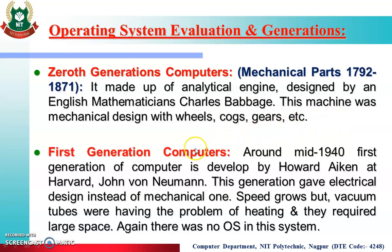After the zero generation, the next is the first generation, around the mid-1940s. This generation gave an electrical design instead of a mechanical one — speed grew up but vacuum tubes had the problem of heating and required a large amount of space. There was no operating system in this generation.